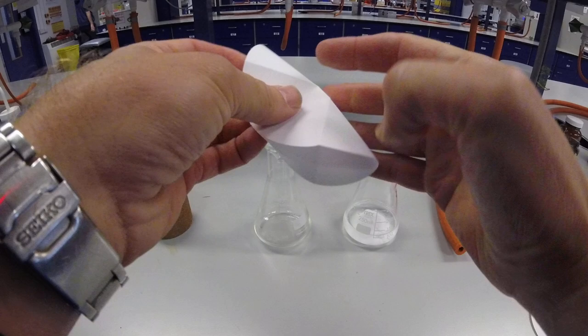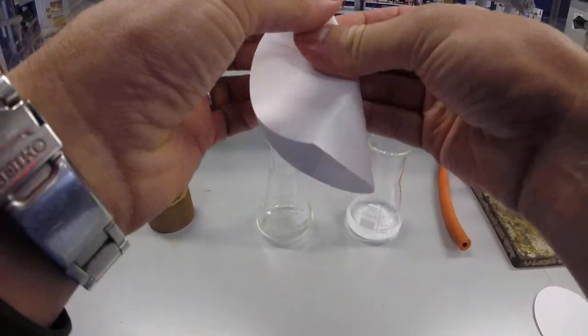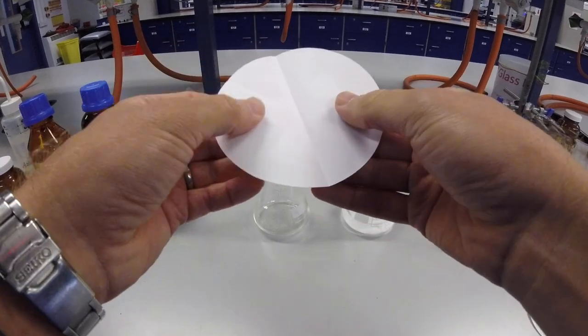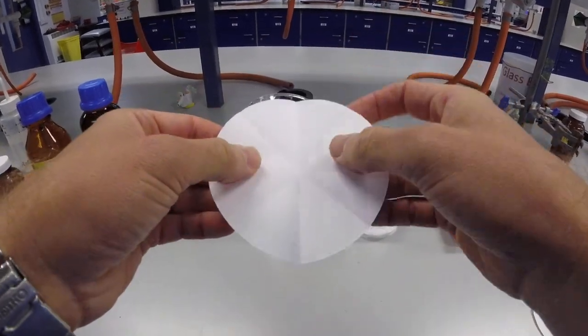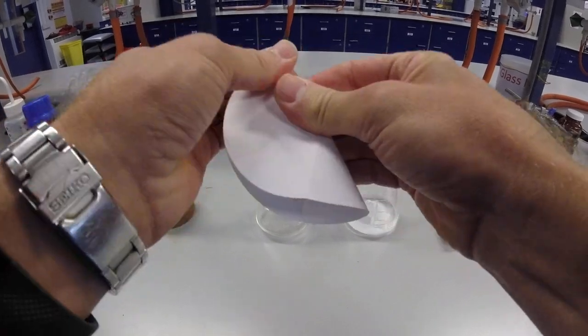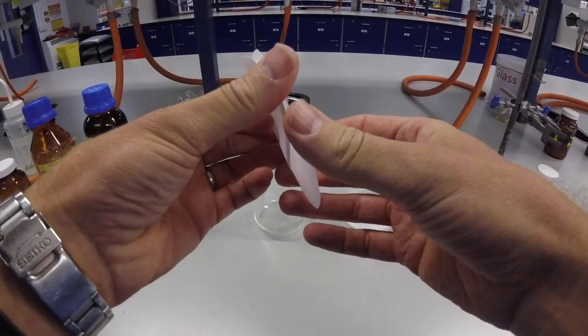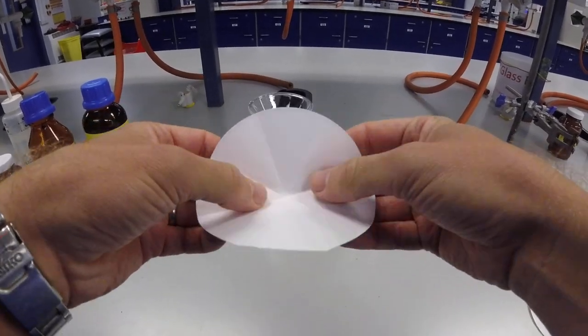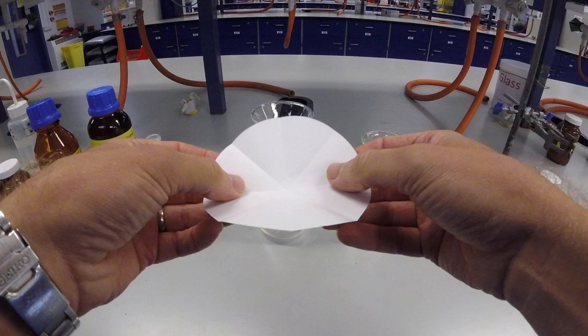And then you're going to take that and fold each one of those in half again. So now we fold it over that way and we've bisected that part. And then we fold it over again. And these folds are all in the same direction. So now you should have eight folds all in the same way.